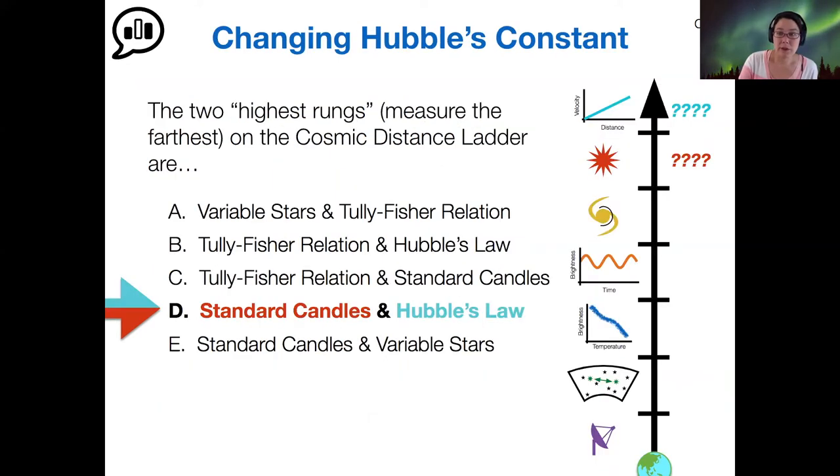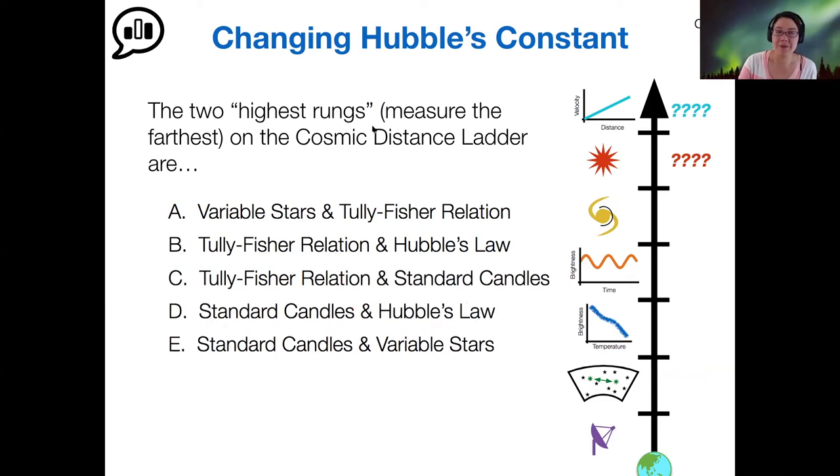So there's lots of different ways that we can actually measure distance. So what are these names of our two highest rungs? And because I already showed you the answer, pull up the chat and tell me what is the method called of this yellow one? So in the chat, what is the name of this yellow method? You can do public or private.